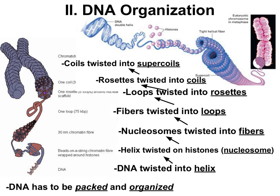Once DNA is associated with histones into nucleosomes, the packing isn't done. The DNA double helix associates with histones and wraps around. But we're not done yet — we've got more packing to do. Nucleosomes are twisted into fibers, fibers are twisted into loops, loops are twisted into rosettes, rosettes are twisted into coils, and coils are twisted into super coils. You can see all of that shown in these diagrams.